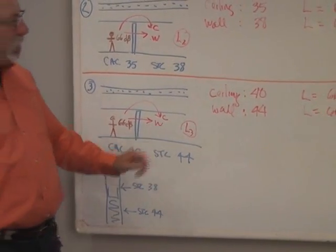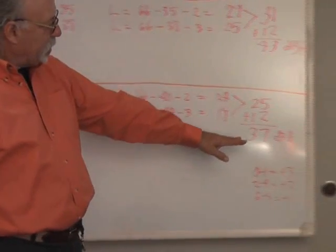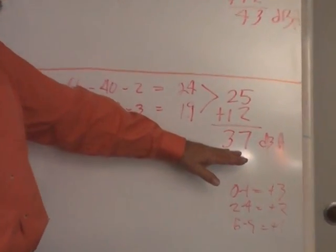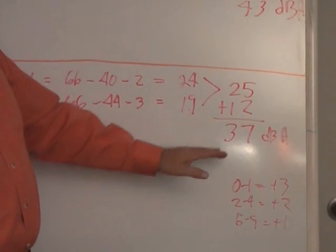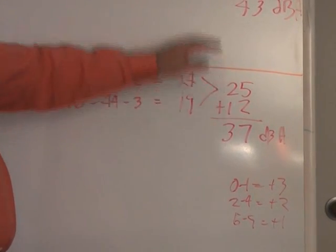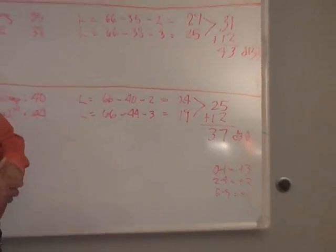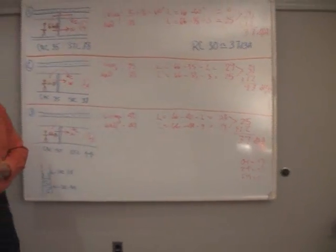Well, we can see that if we look at the paths through the ceiling and wall, again we get a 37 just as we did with the slab-to-slab wall. And it tells us that with this level of background noise we should again be able to obtain confidential speech privacy.